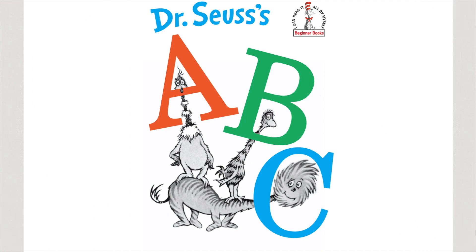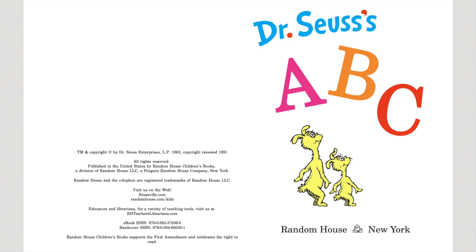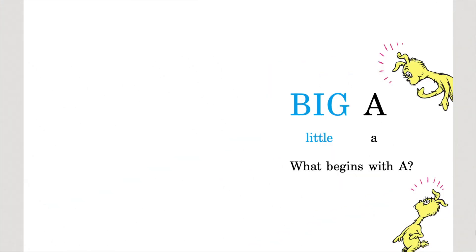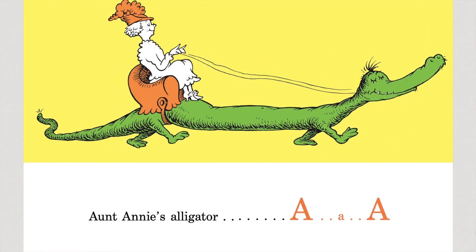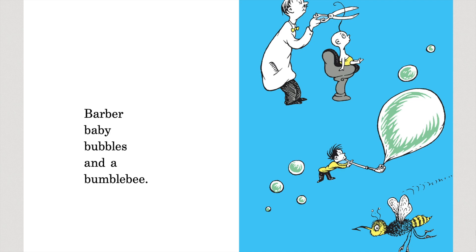The title of today's story is ABC. The author is Dr. Seuss. Dr. Seuss's ABC. Big A, little A, what begins with A? Aunt Annie's Alligator, A, A, A. Big B, little B, what begins with B? Barber baby, bubbles, and a bumble bee.